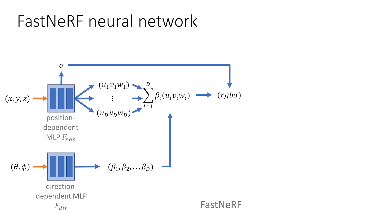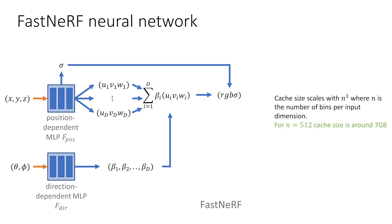FastNeRF factorizes the problem into two subnetworks: one that is dependent only on sample position, and one that depends only on the ray direction. The position-dependent network outputs a deep radiance map. The view-dependent network outputs weights that scale the components of the deep radiance map to obtain a final RGB value at each sample position as seen from the specified direction. FastNeRF's factorized architecture allows for separately caching the position- and direction-dependent networks, making caching feasible as it avoids the memory explosion of a five-dimensional cache. Since FastNeRF uses the same set of inputs and outputs as NeRF, it can be used as a drop-in replacement for many methods that already use NeRF.